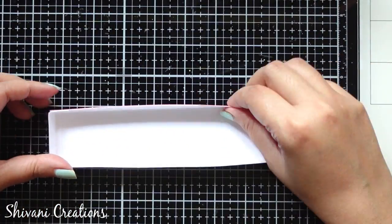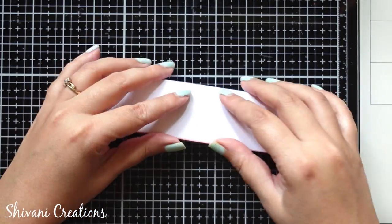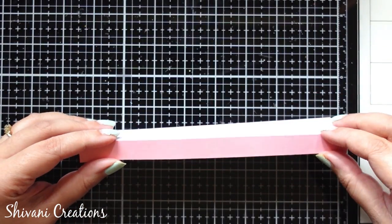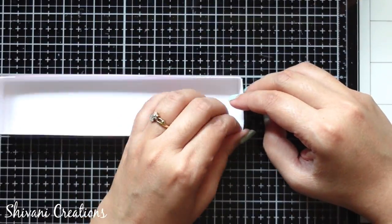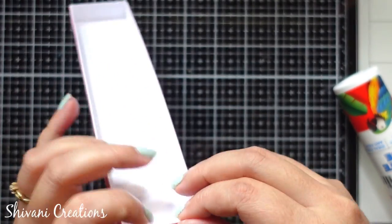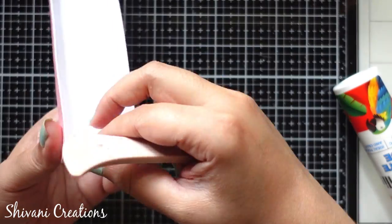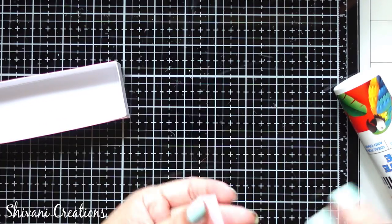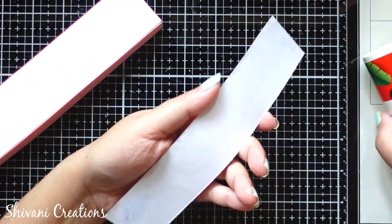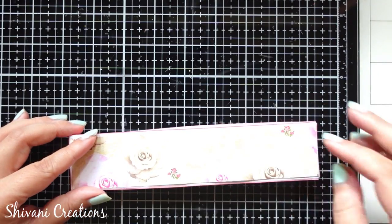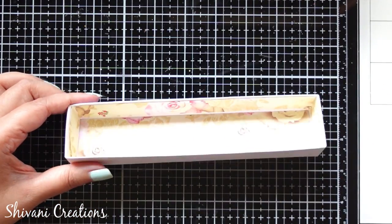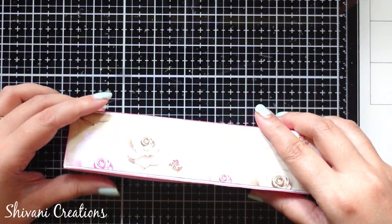Now I'm just decorating the lid using some pink color cardstock and pattern paper. Similarly, I have decorated the box using the same pattern paper from inside. The decorated box is ready.